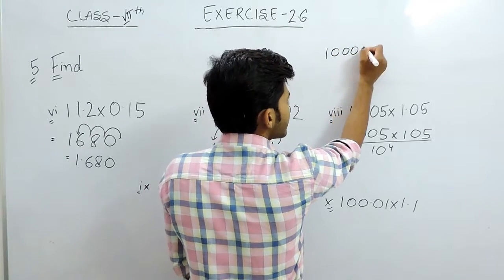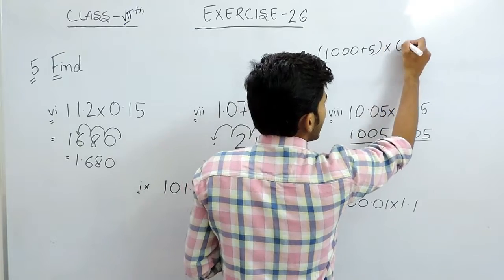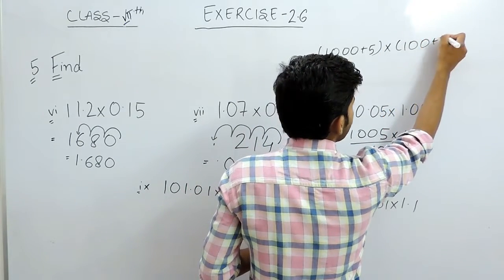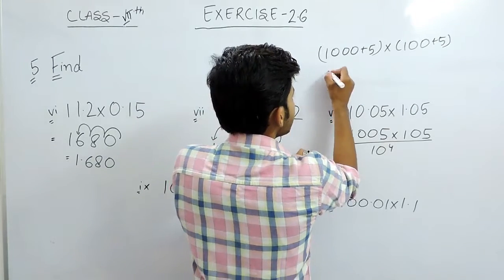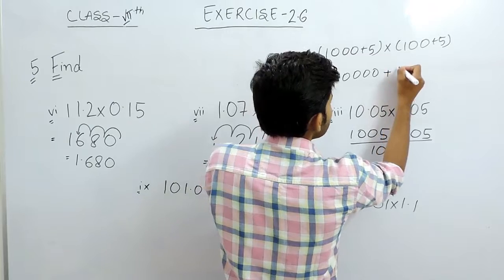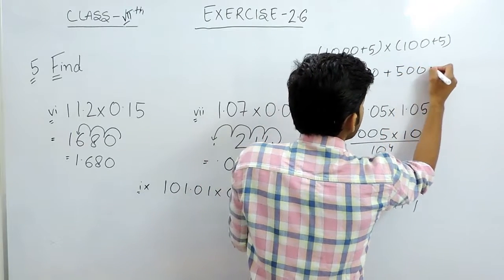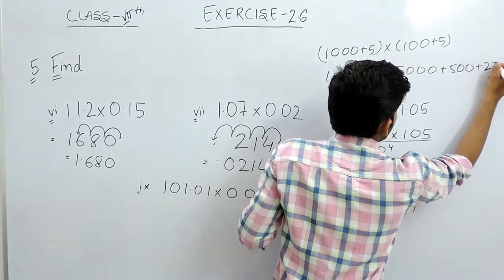1000 plus 5 multiplied with 100 plus 5. So now, we will multiply these and it will give us 10 to the power 5 plus 5000 plus 500 plus 25.